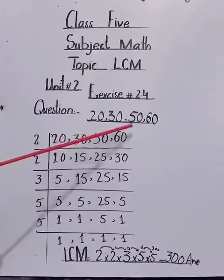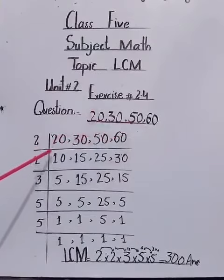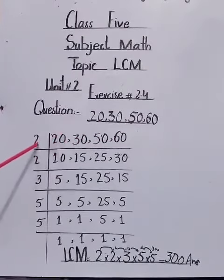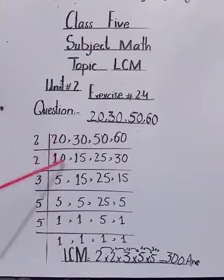Question: 20, 30, 50, 60. These all numbers will be divided by 2. 2 times 1 is 2, 2, 0, 0.